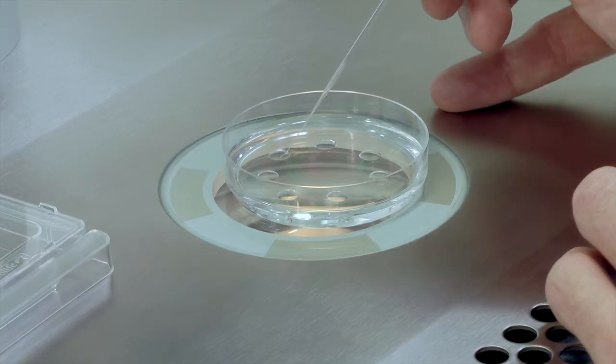If you are assessing the ICSI oocytes, then you can use the G1 Plus dish, the micro droplet dish that you have prepared the day before.